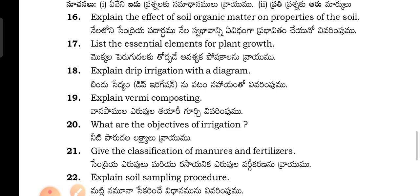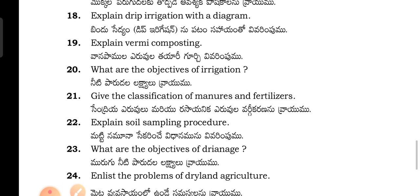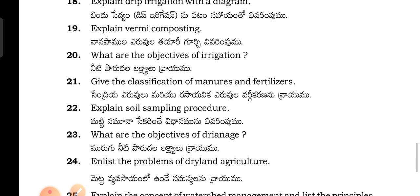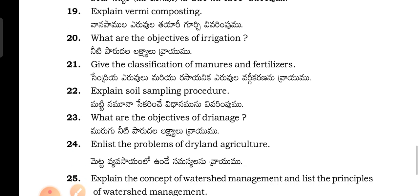Explain vermicomposting using a diagram. What are the objectives of irrigation? Give the classification of manures and fertilizers.